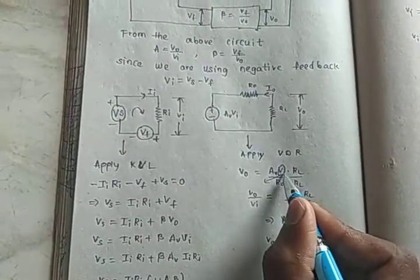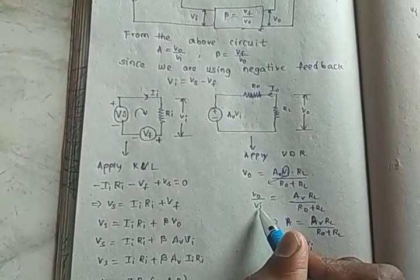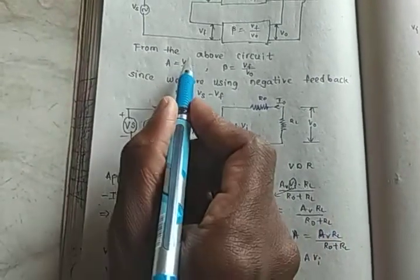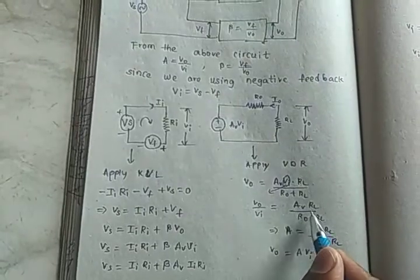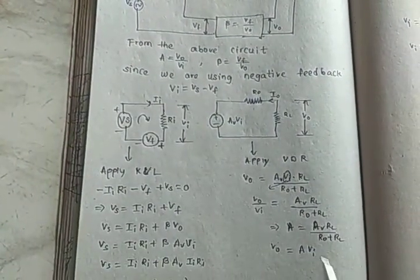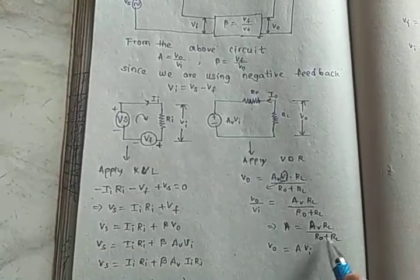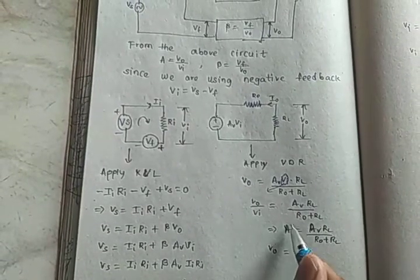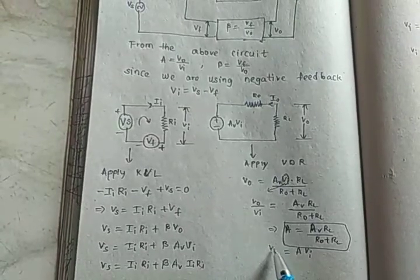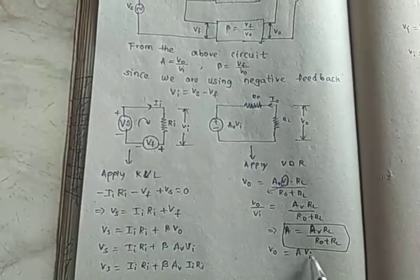And send this VI outside. V0 by VI. V0 by VI means A is equal to AV into RL by R0 plus RL. Therefore V0 is equal to A into VI.